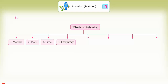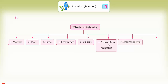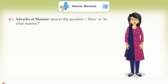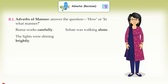The kinds of adverbs are: (1) Manner, (2) Place, (3) Time, (4) Frequency, (5) Degree, (6) Affirmation or Negation, (7) Interrogative, (8) Relative. B1: Adverbs of manner answer the question 'how' or 'in what manner'. Examples: Rena works carefully. He was walking alone. The lights were shining brightly.